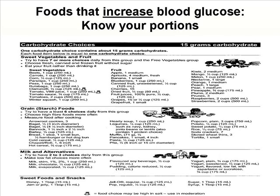All your fruits contain carbohydrates that will increase your blood glucose: apples, apricots, bananas, blueberries, canned fruit — even if it's in unsweetened juice or water — cherries, dried fruit, fruit juices — even if it says 100% pure juice, no sugar added, it still contains carbohydrates because it comes from a fruit. You've got grapes, grapefruit, kiwi, mango, melon, nectarine, oranges, peaches, pears, pineapples, plums, prunes, raspberries, and strawberries. Just remember that sweet vegetables, starchy vegetables, and fruit all contain carbohydrates that will increase your blood glucose.